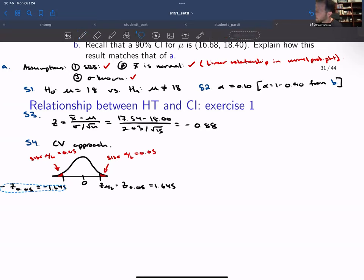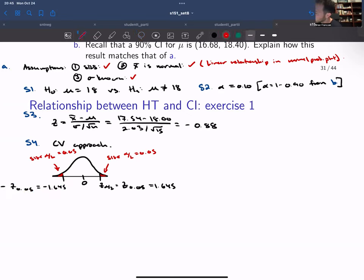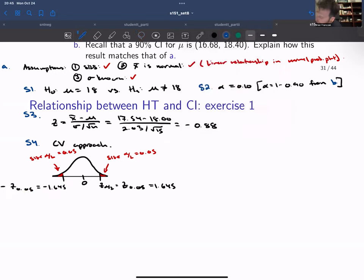Now we take our test statistic, which is negative 0.88, and we mark down where that's located. We can see that the test statistic is not in a rejection region, so we're not going to reject.